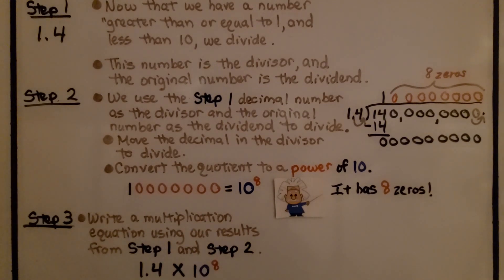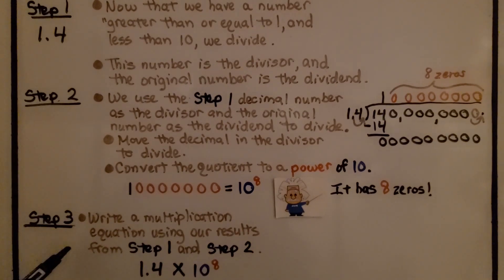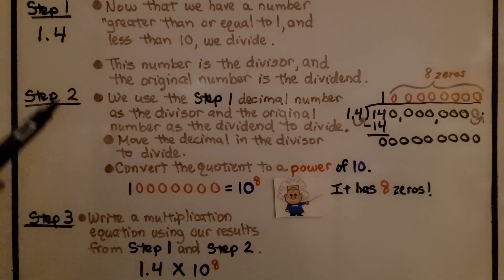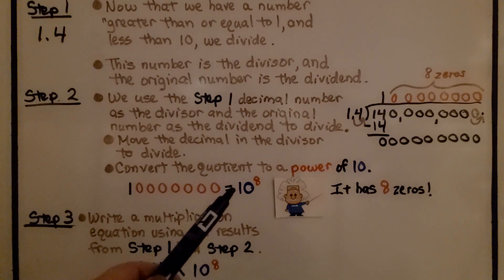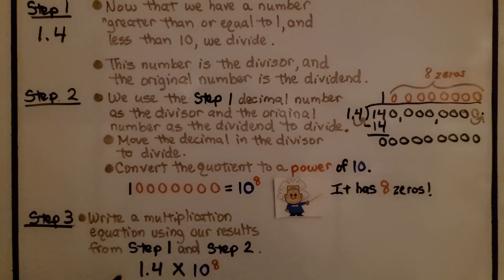For step 3, we write a multiplication equation using our results from step 1 and step 2. We get 1.4 times 10 to the 8th power.